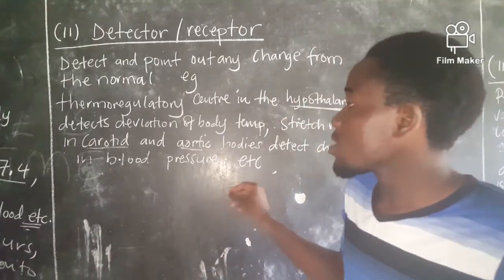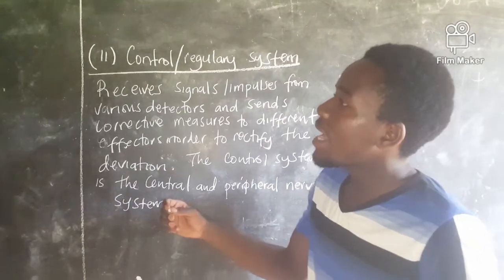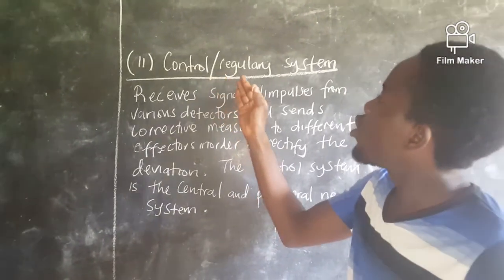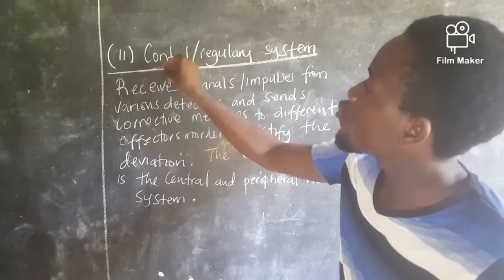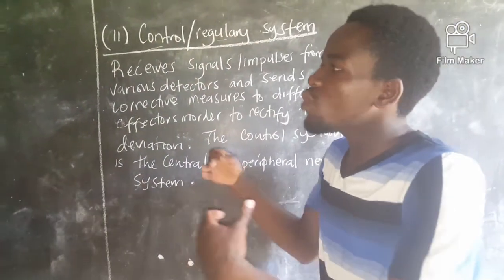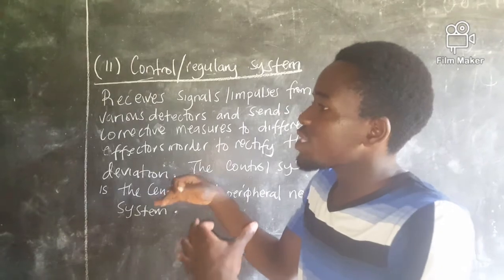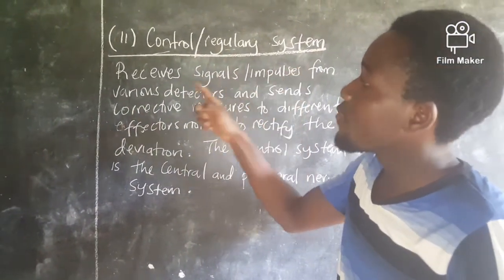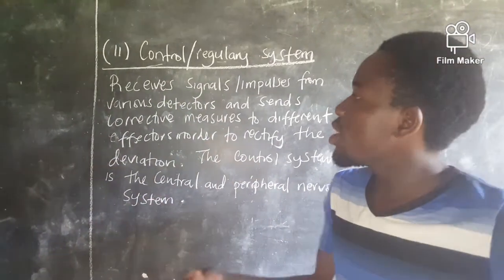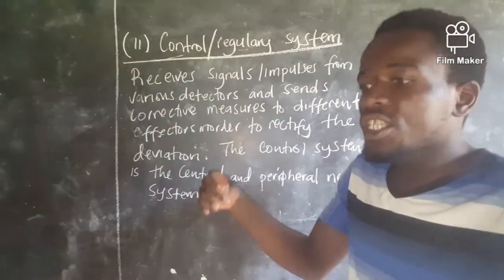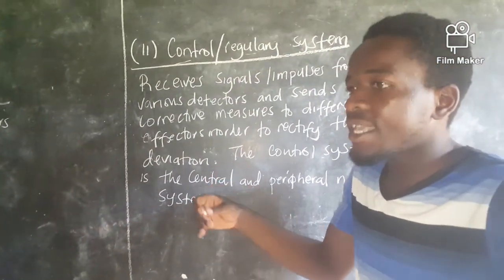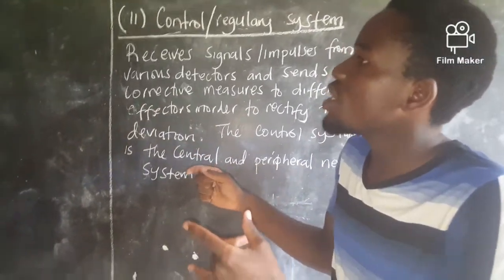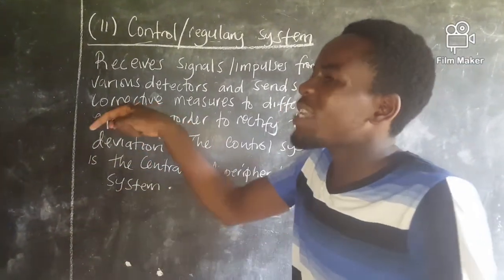The next component of the homeostatic system is the control or regulatory center. The control or regulatory center receives signals or impulses from various detectors. After a detector is informed that there has been a deviation from the set point, it sends that information to the regulatory center.